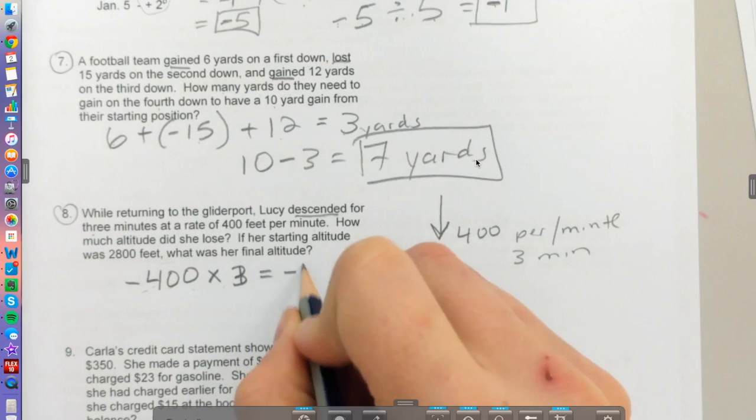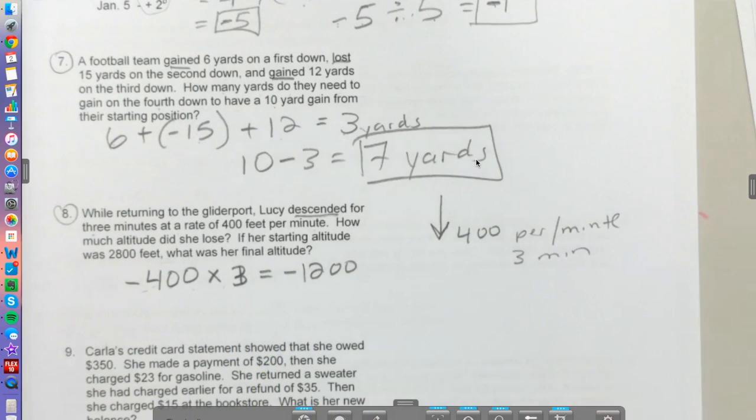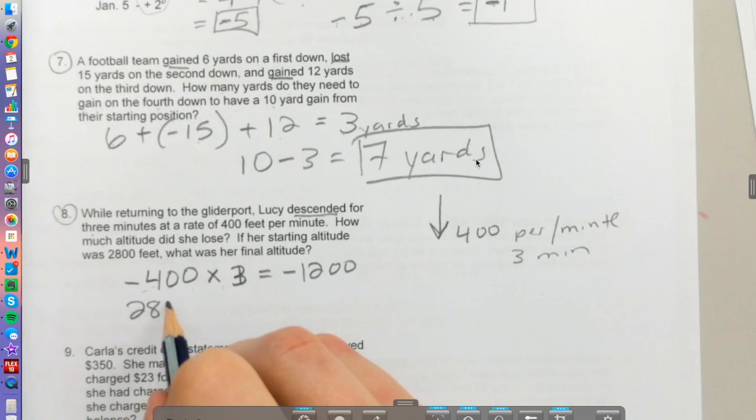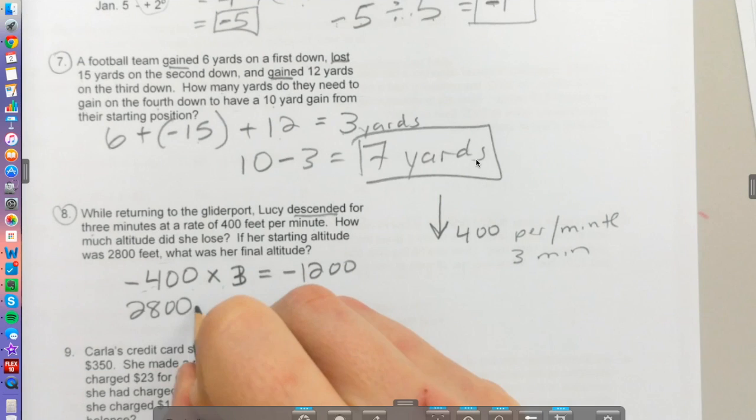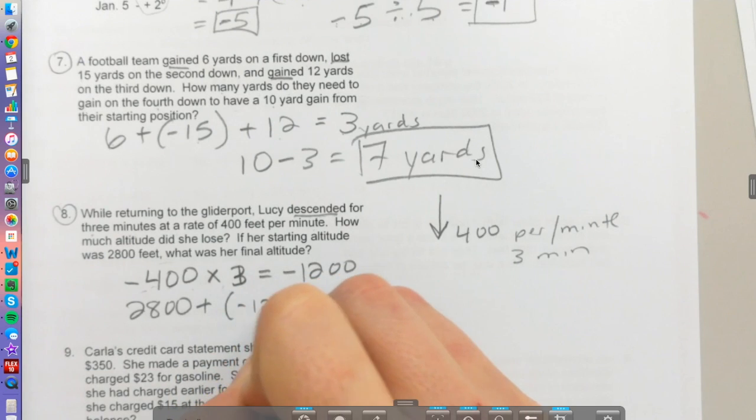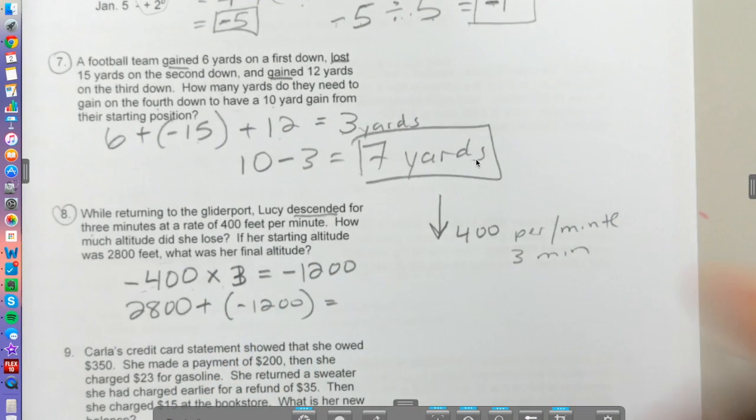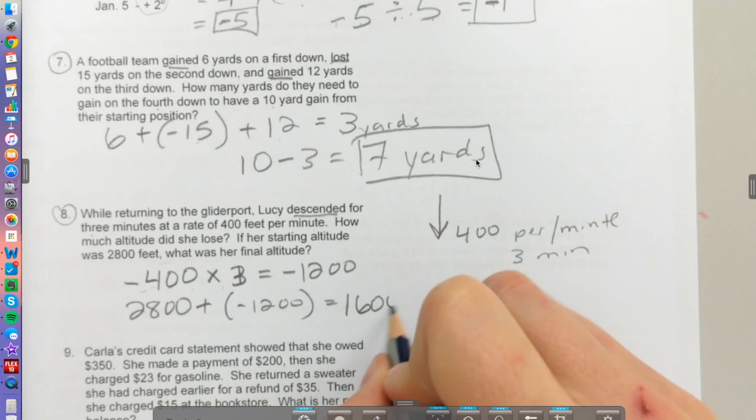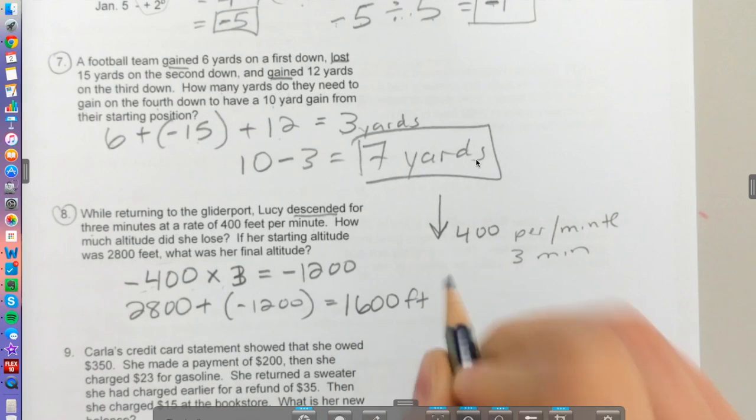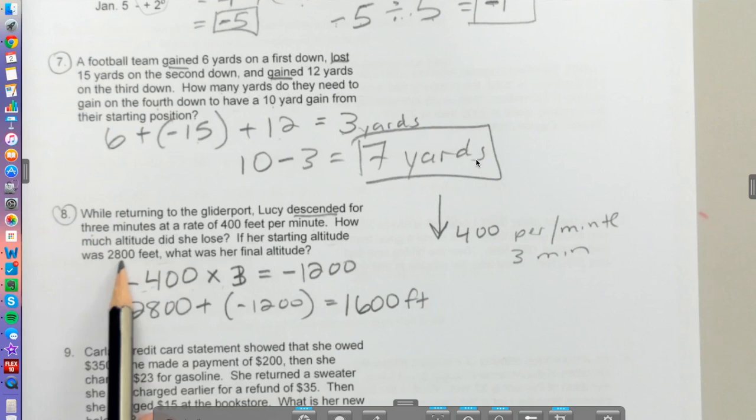If she started at 2800 feet and she lost 1200, that means she's now at exactly 1600 feet. So her starting altitude is 2800, what's her final altitude? 1600 feet.